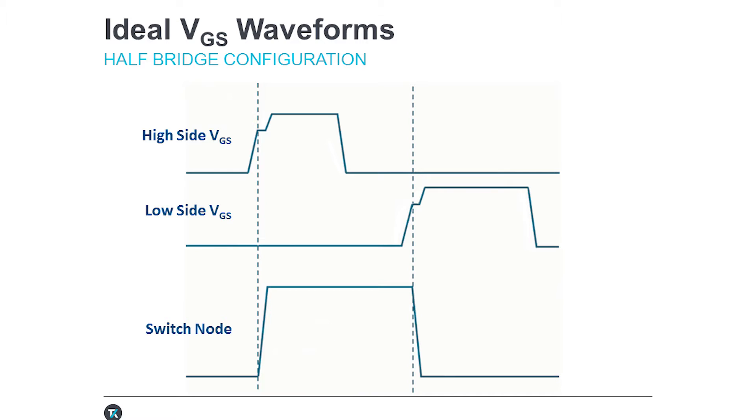Subsequently, the high-side gate turns off, there's a dead time, and then the low-side gate turns on and pulls the switch node down.